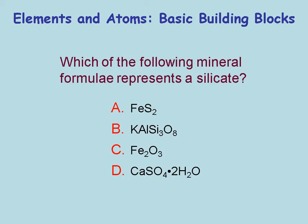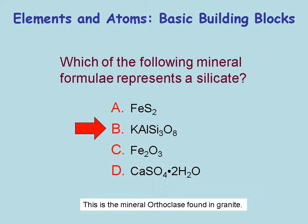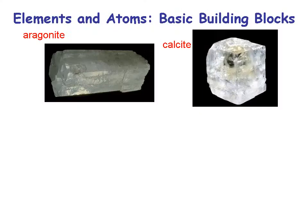Here's a question: which formula represents a silicate? A silicate combines silicon and oxygen in the mineral structure. The mineral orthoclase — answer B — contains silicon and oxygen. It's that pink mineral we saw in granite at the very first slide.